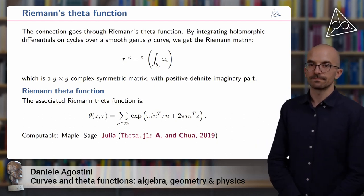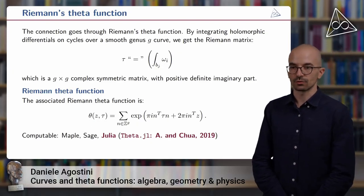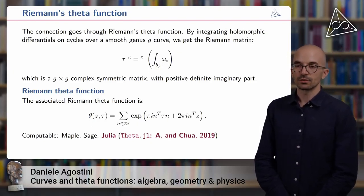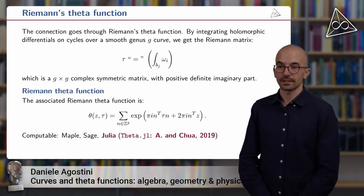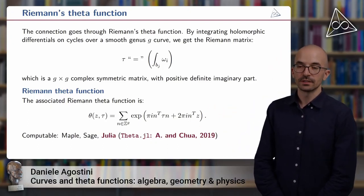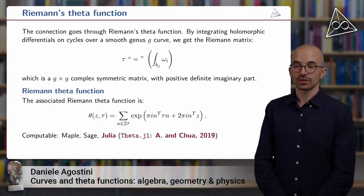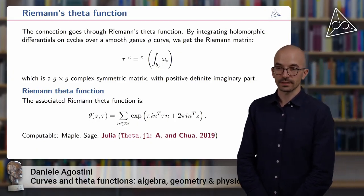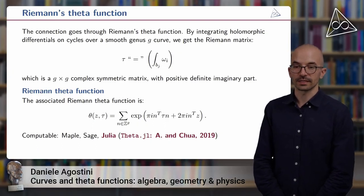So out of this Riemann matrix now we can define the Riemann theta function that was introduced by Riemann himself. So you can see it here, it's an infinite sum of exponentials. The sum is over the multidimensional lattice Z^g, and each term is the exponential of a quadratic form in tau and a linear form depending on the complex vector z.